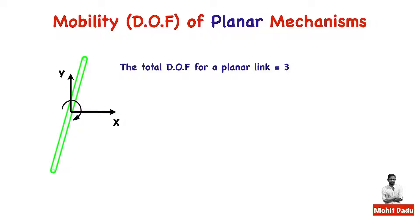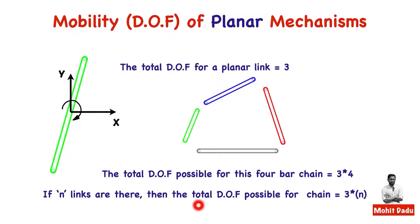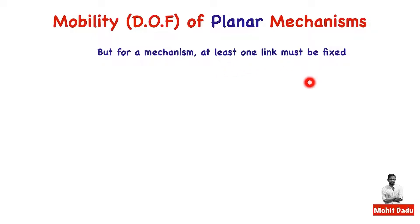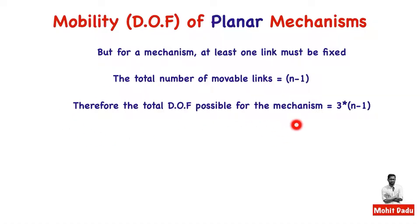If you have four links, each with three degrees of freedom, the total degrees of freedom for a four-bar chain is three times four. For n number of links, the total possible degrees of freedom is 3n. In a mechanism, at least one link must be fixed, so the number of mobile links reduces from n to n minus one. Therefore, the total degrees of freedom possible for the mechanism becomes three times (n minus one).